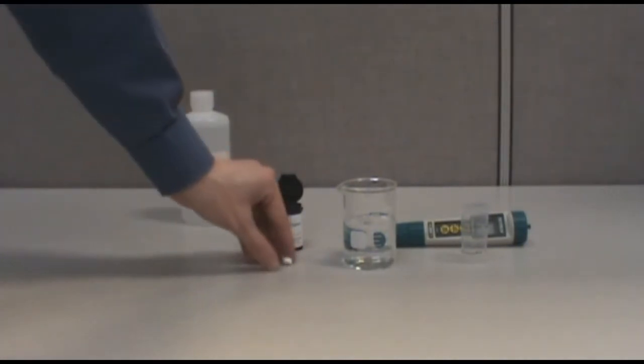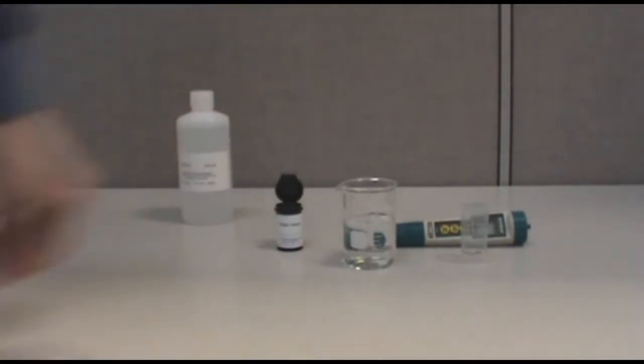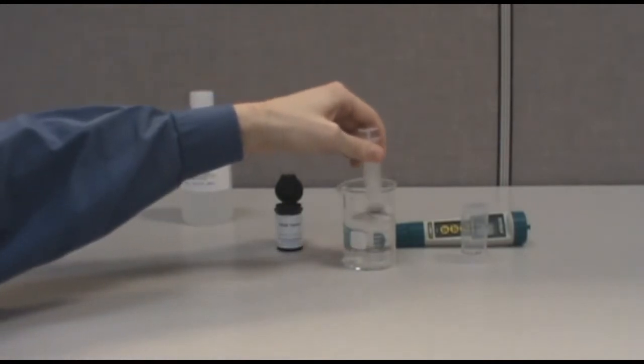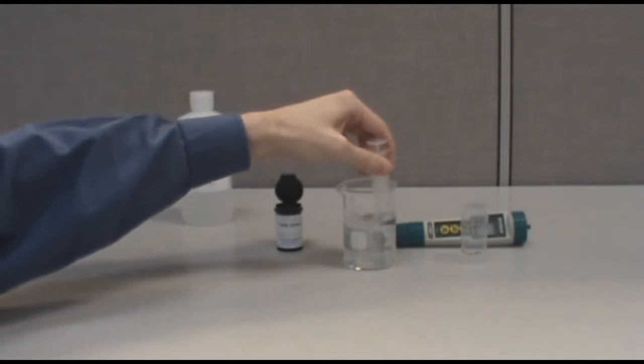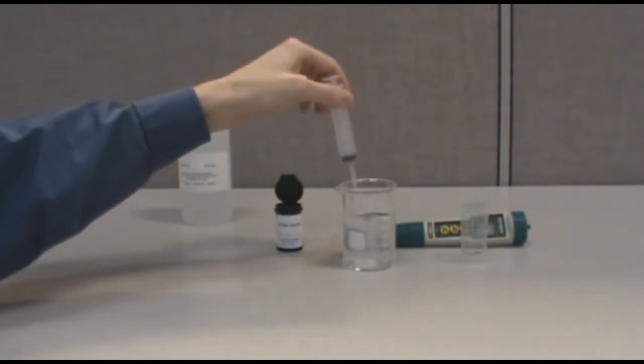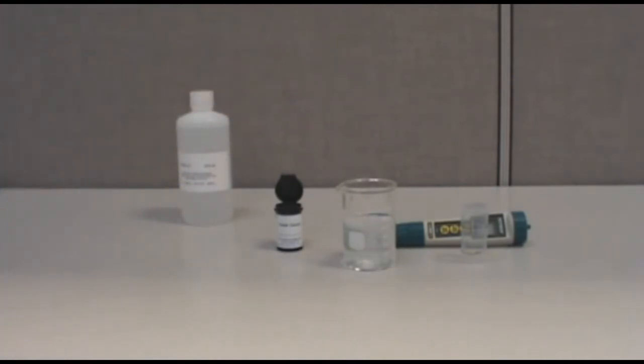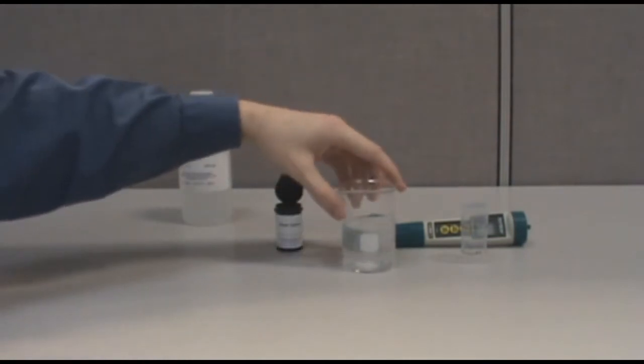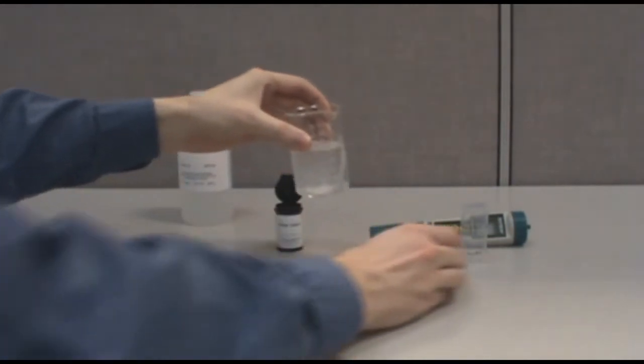To calibrate the meter, first dissolve a reagent tablet in your 1 part per million standard. Pour 15 to 20 milliliters of the prepared solution into the sample cup.